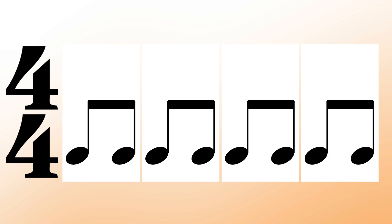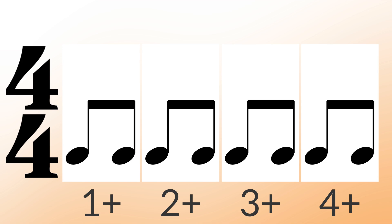An eighth note is worth half a beat, so we can fit two into a box or into a beat. To divide the beat, we count using ands: one and, two and, three and, four and.